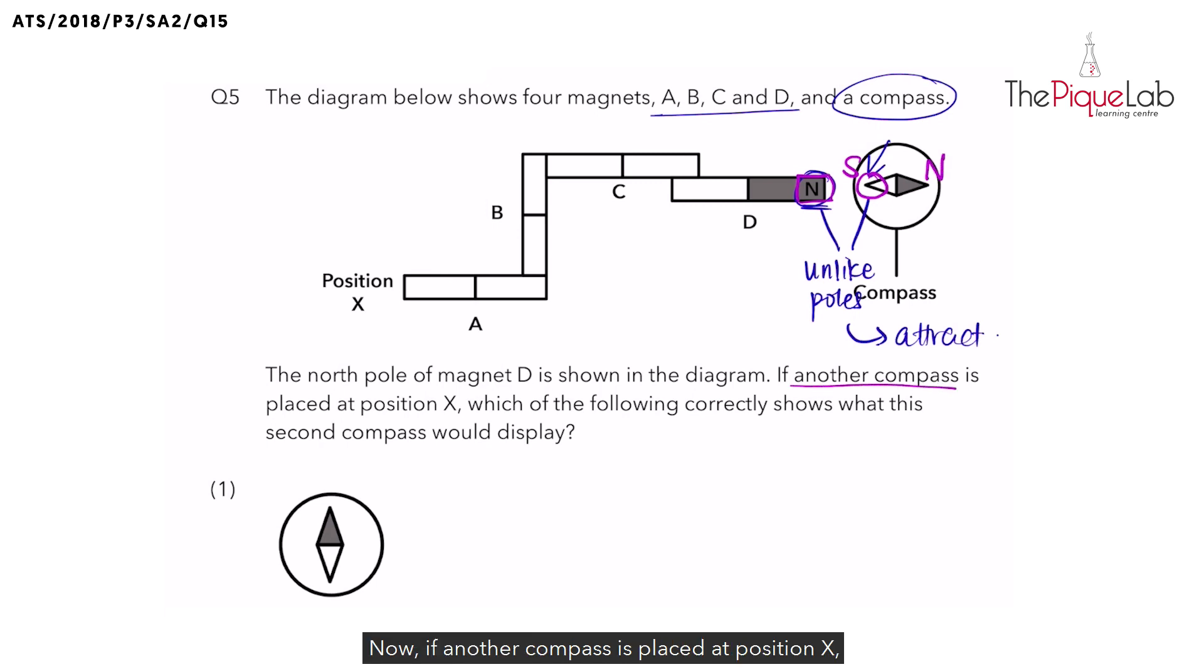Now, if another compass is placed at position X, which of the following correctly shows what this second compass would display? To find this out, let's continue to write out the poles of the other magnets.